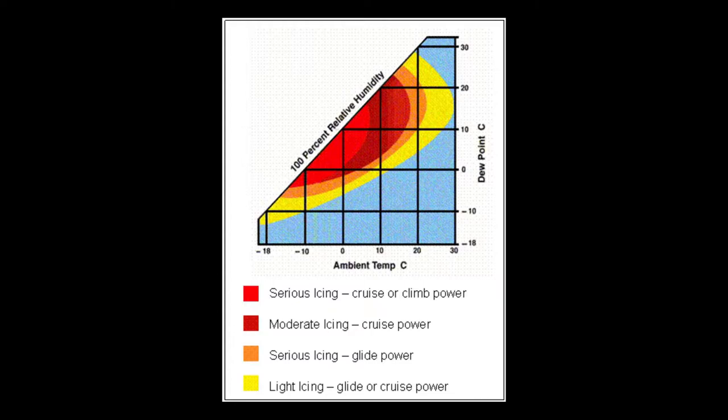First you start noticing some engine roughness, then you look over your gauges and notice that you're losing some manifold pressure — the RPM is constant but manifold pressure is dropping — and you realize you're developing carburetor icing and need to apply carburetor heat.